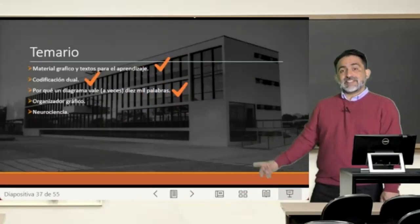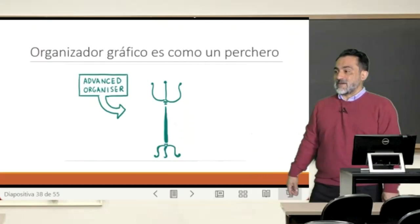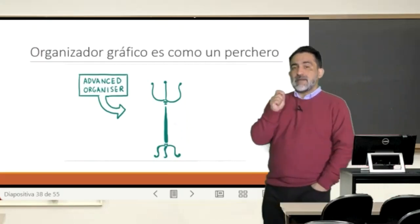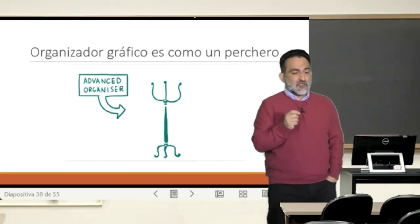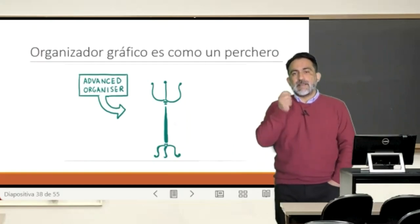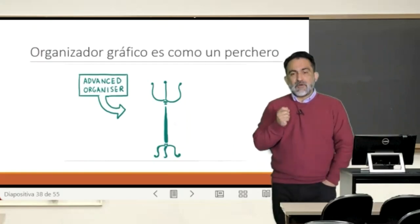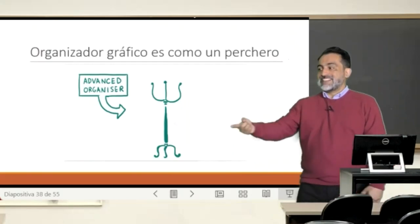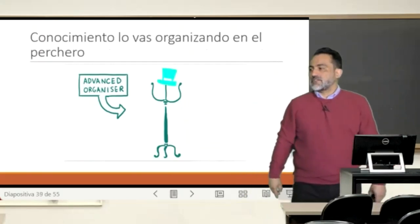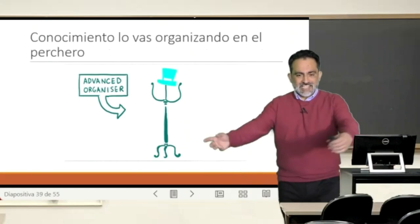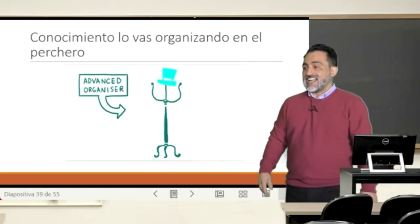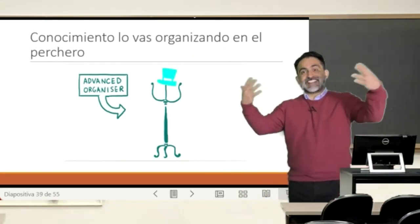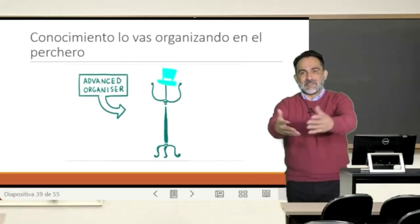Entonces aquí, después de esta larga vuelta, llegamos a los organizadores de gráficos que cumplen precisamente una función muy importante del punto de vista espacial. So we can think of a graphic organizer like a kind of orchard, where if someone comes to the house — in this case, the professor comes to the knowledge — to show it to the students.